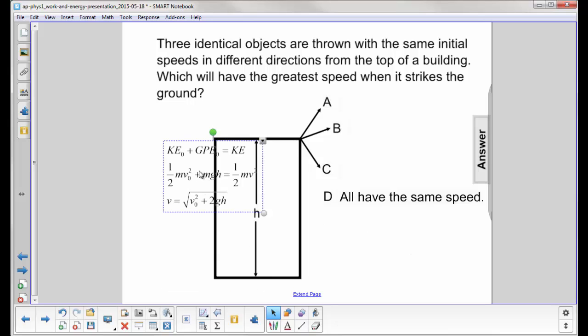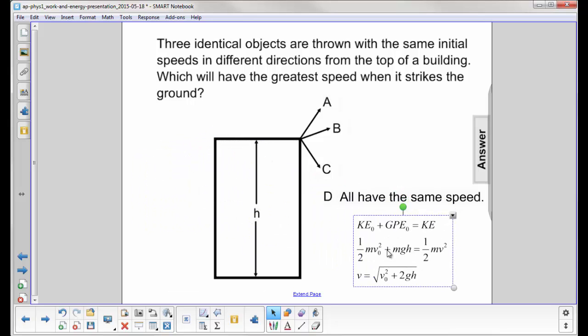Let's just put it into an equation real quickly here. Initial kinetic energy plus gravitational potential energy all turns into kinetic energy at the bottom. Substitute in the letters, and you come up with the final velocity.